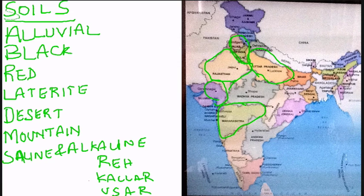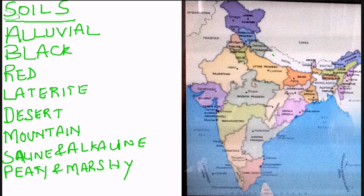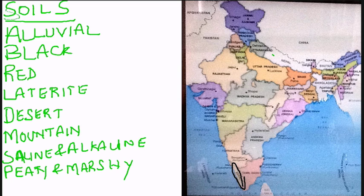The next soil is the peaty and marshy soil. This occurs in humid regions and is formed by the accumulation of organic matter. It is black in color and highly acidic. The areas where this soil is found include the Kottayam district and Alleppey in Kerala, coastal Orissa, and the Sundarbans in West Bengal.